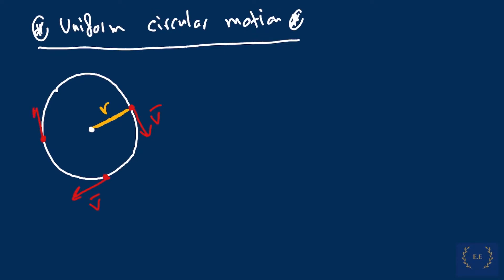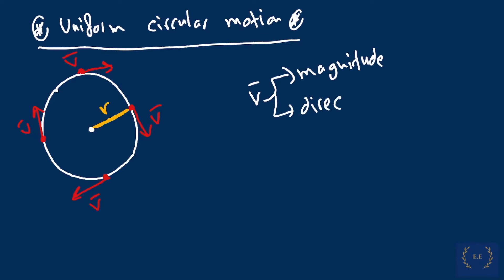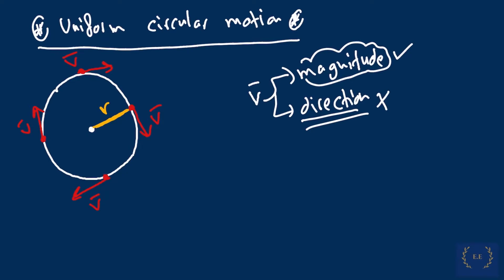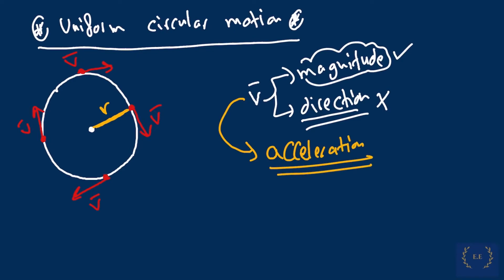What do we mean by tangent? It means it touches at exactly one point — the velocity vector will be touching the circular path at exactly one point. However, since velocity is made up of magnitude and direction because it's a vector, even though the magnitude is the same, the direction is changing. Once we have any change in velocity, whether in magnitude or direction, we're going to expect the presence of acceleration. This is what we call the centripetal acceleration.